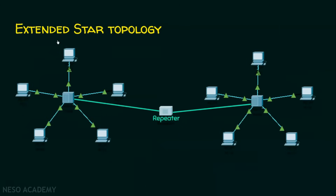We can also have a variation of star topology. Two star topologies can be connected with each other with the help of a repeater, which will be covered in the next lecture. The key point is that two or more star topologies can be interconnected this way.